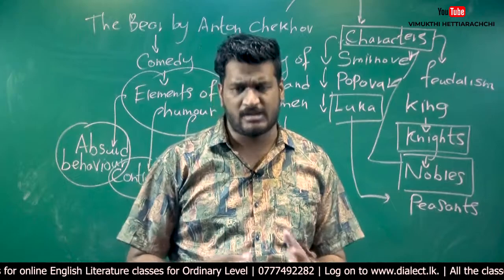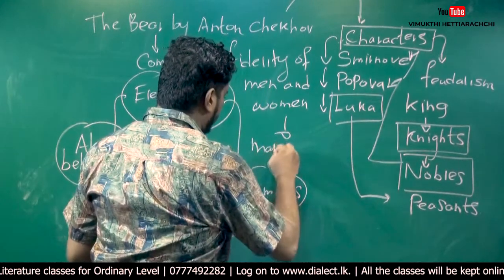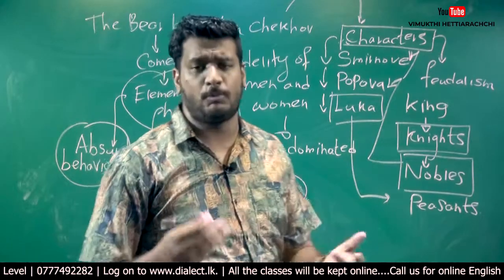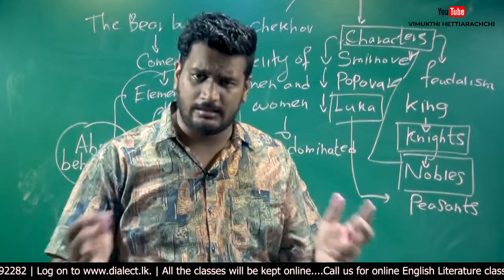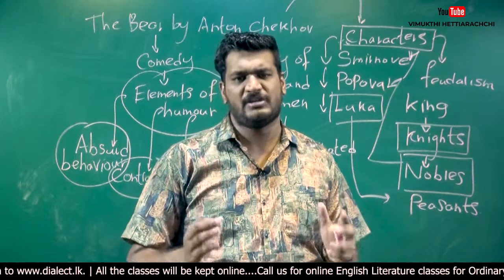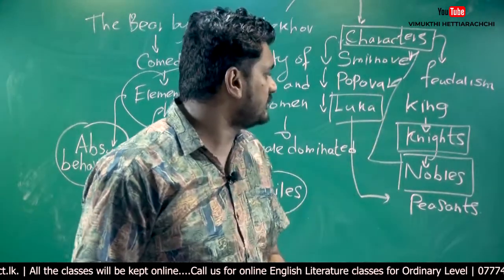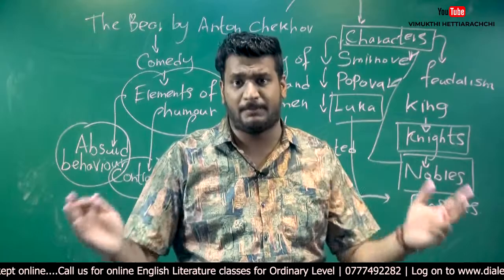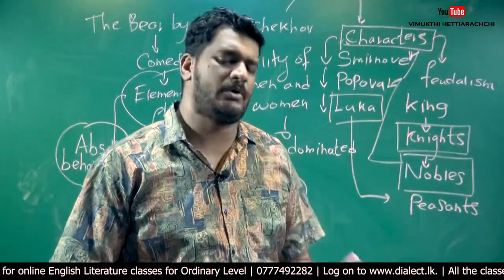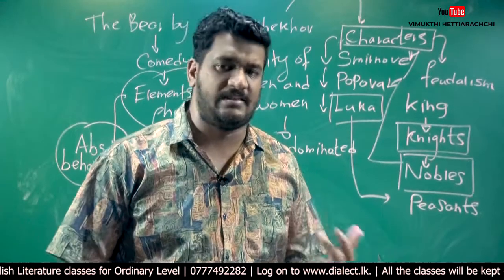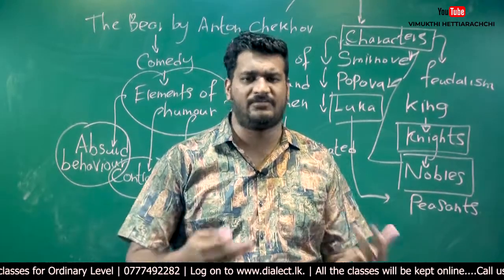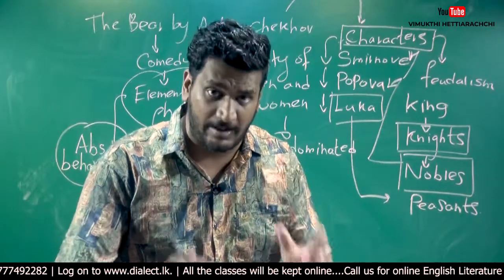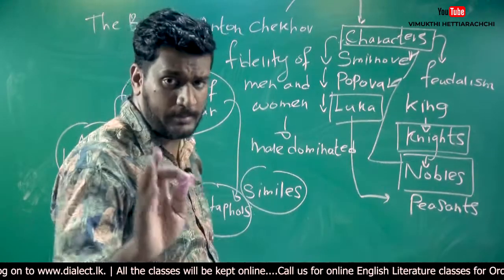On the other hand, the contemporary Russian society can be taken as a male-dominated society. Even though Popova wanted another marriage and was craving for another man, the society around her did not allow her to do that. That is why she had to wait for seven months until Smirnov came to meet her. The social pressure given to her was much higher — she didn't want to meet another person because otherwise people would call her names. Popova did not want to take that bad reputation.